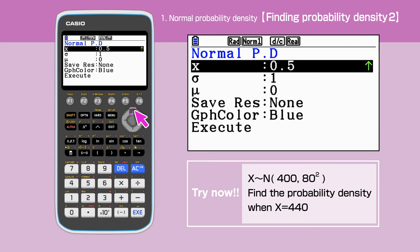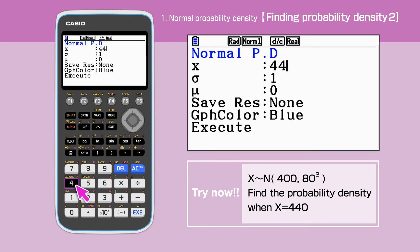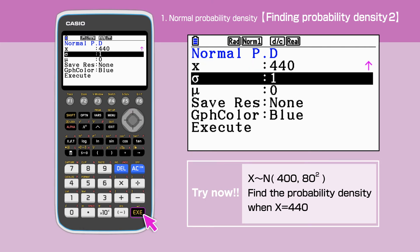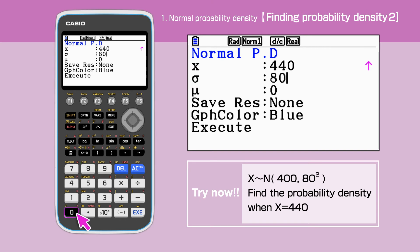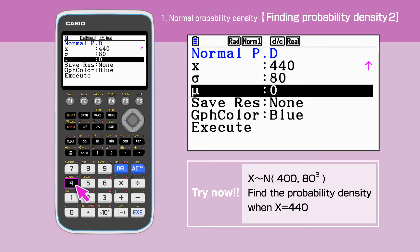This time you have x equals 440, standard deviation is 80, and the mean 400.